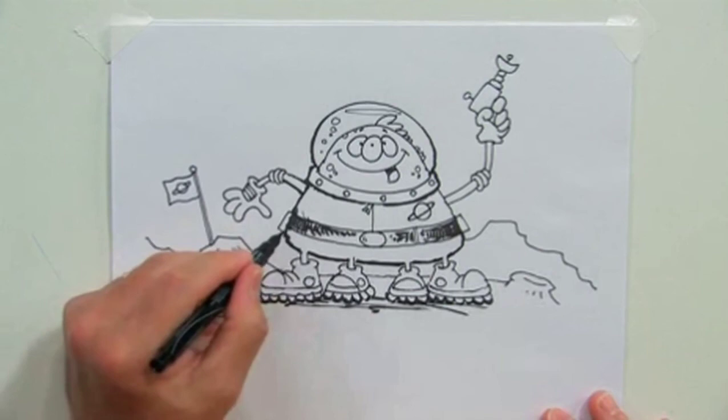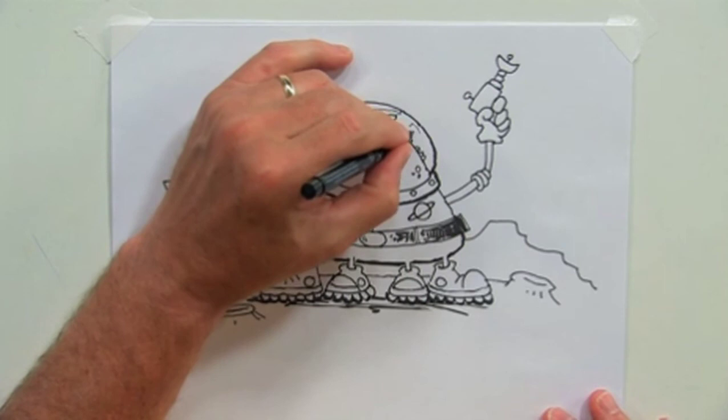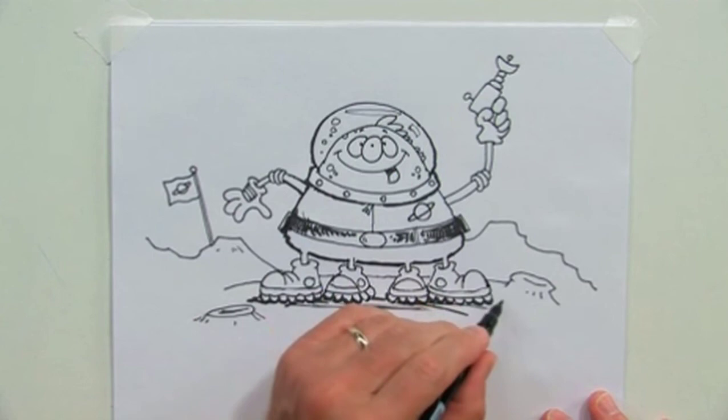We'll color this guy in. And this one over here too. Let's add a little reflection to his helmet. I think we're pretty close to being finished with that guy. Let's just add a little bit more shadow underneath him.